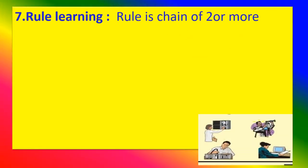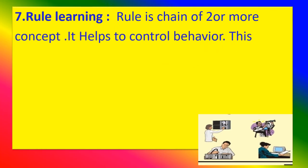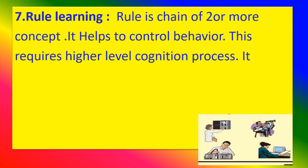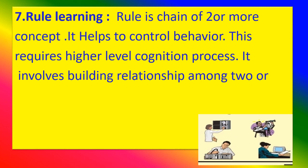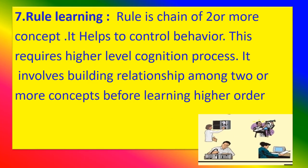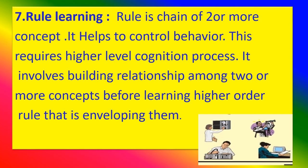Type 7: Rule Learning. A rule is a chain of two or more concepts. It helps to control behavior and requires a high level of cognitive processing. It involves building relationships among two or more concepts before learning the higher-order rule that encompasses them.